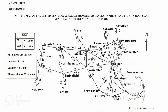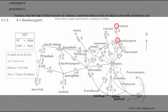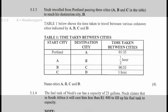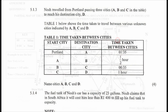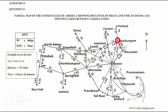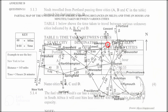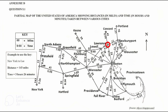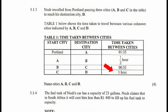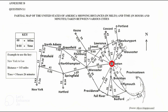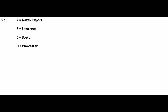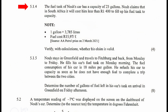From the map in Annex D, the only city connected to Portland is Newburyport, so city A is Newburyport. From Newburyport to city B the travel time is 30 minutes; from the map, that city is Lawrence, so city B is Lawrence. From Lawrence to city C the travel time is 35 minutes; that city is Boston, so city C is Boston. From Boston to city D the travel time is one hour; that city is Worcester, so city D is Worcester.